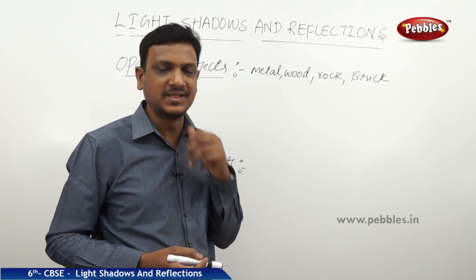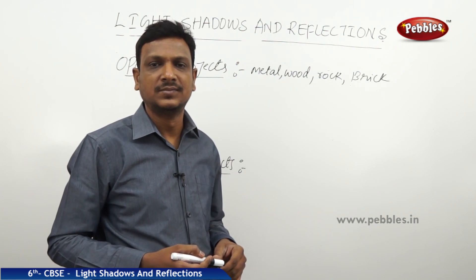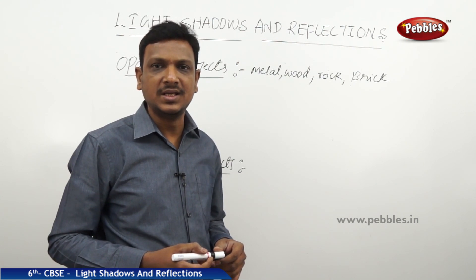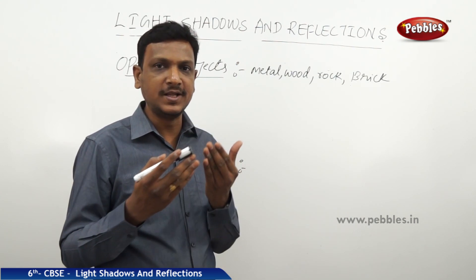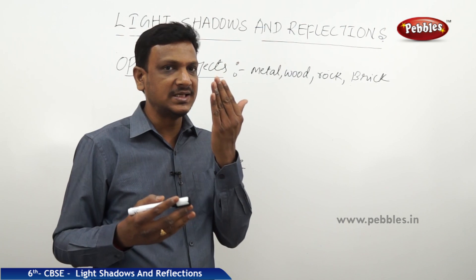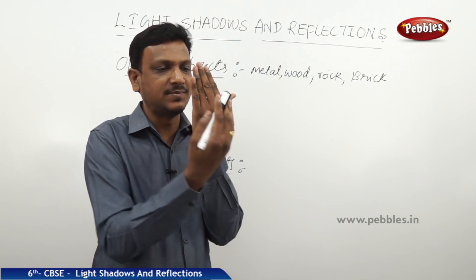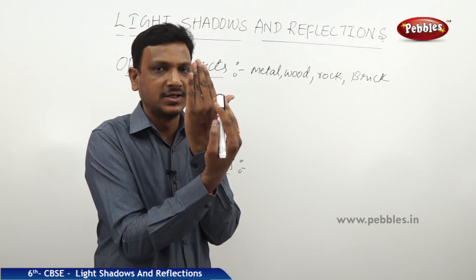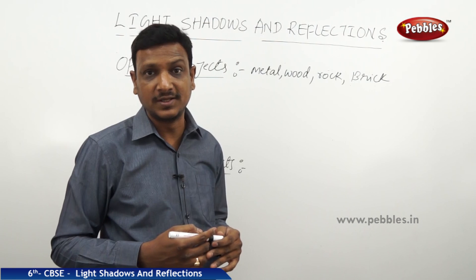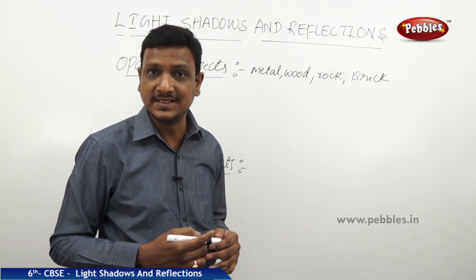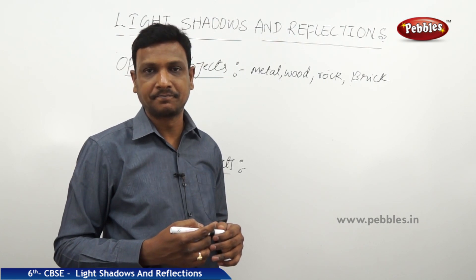How can you check that? If you take the object in your hand and you are able to see something else which is behind the object, then you can say that it is transparent. If you cannot see through it, it is opaque.